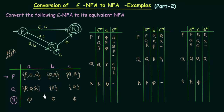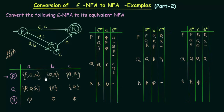Now we have got the states for our NFA. The question is what will be the final states? R was a final state, so R will definitely be a final state in this NFA too. Will we have any more final states? P on Epsilon can reach R, so any state that can reach the final state only on Epsilon will also be a final state. So P will also be a final state. Q just by Epsilon cannot reach the final state R, so Q will not be a final state.